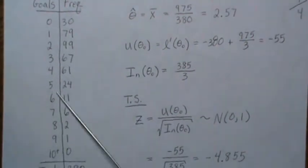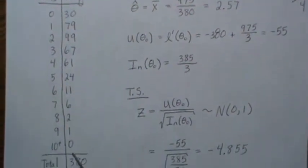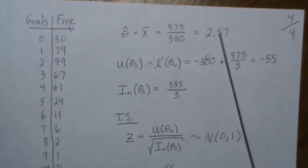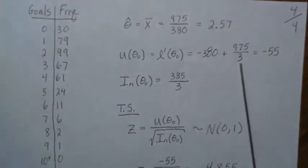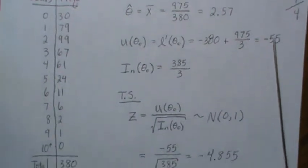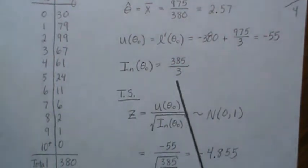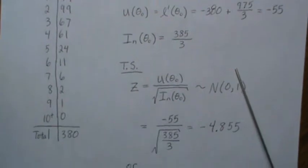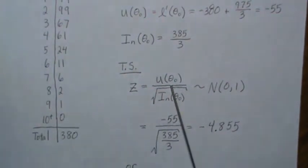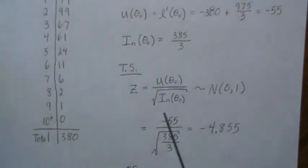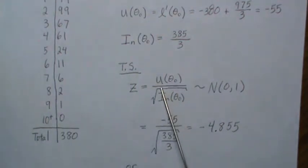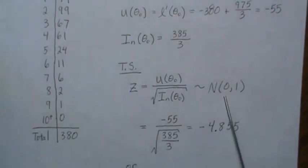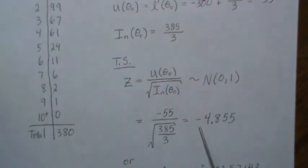By the central limit theorem, we'd expect the score to behave like a normal distribution with mean zero and this variance. Here we have the number of goals and their frequencies — total 380 games. The sample mean is 2.57. We compute the score and plug in the hypothesized value of three, getting negative 55. The Fisher information using the hypothesized value of three gives us our variance. Our test statistic Z is the score divided by its standard deviation, which should follow a standard normal since the mean is zero. Plugging in the values we get Z equals negative 4.855, which is way in the left tail — so we reject.